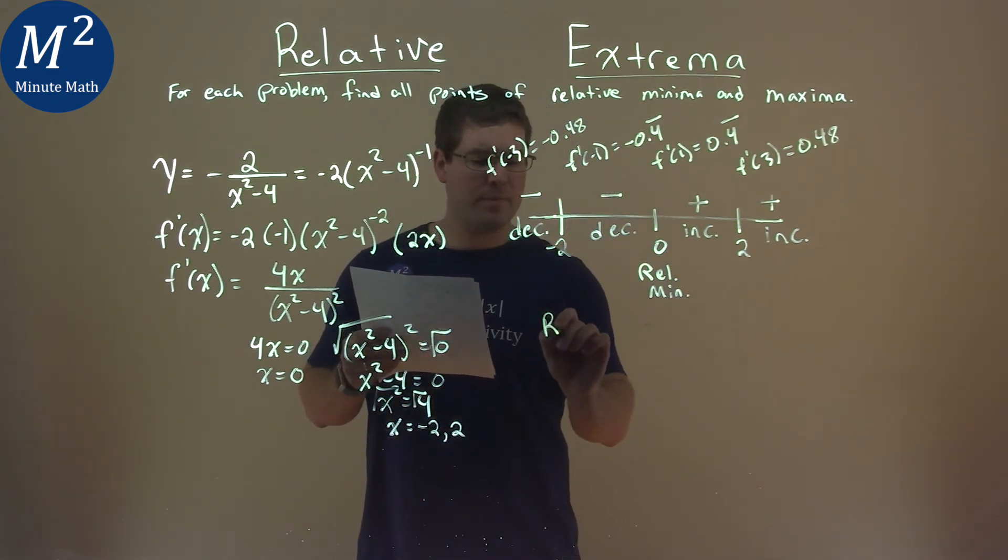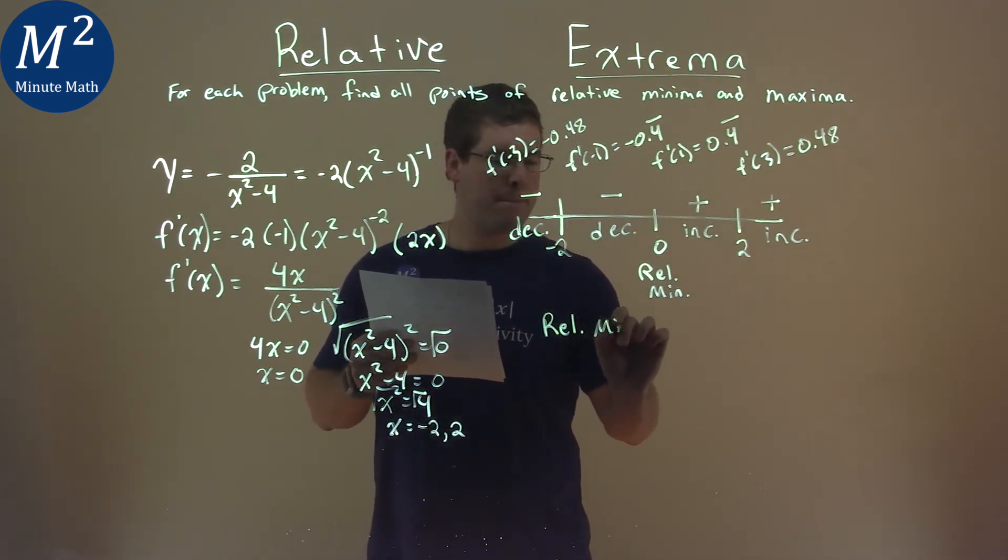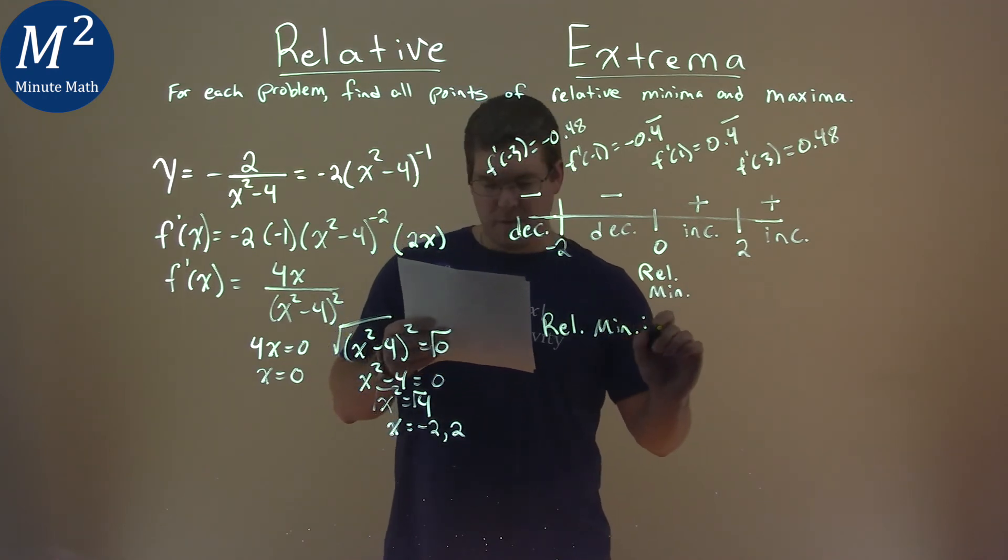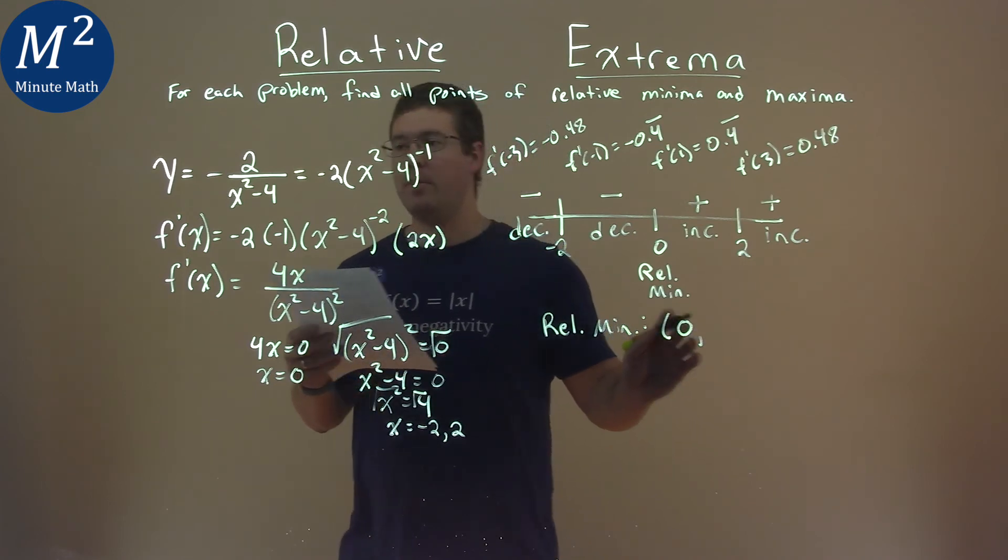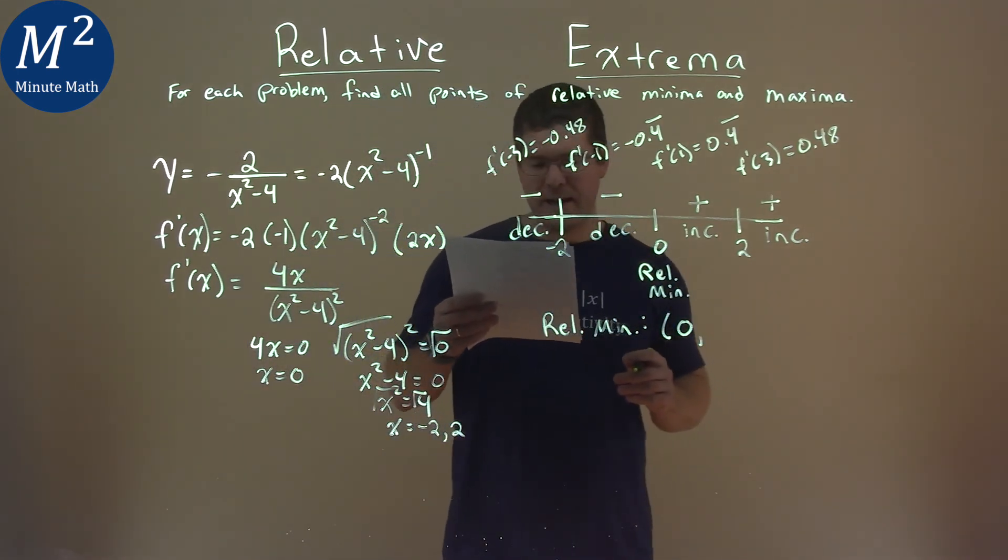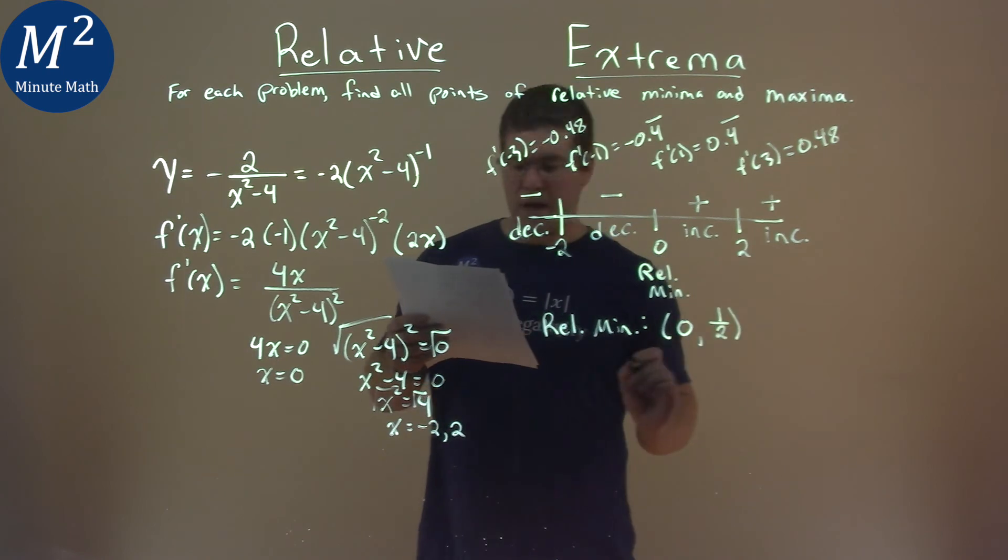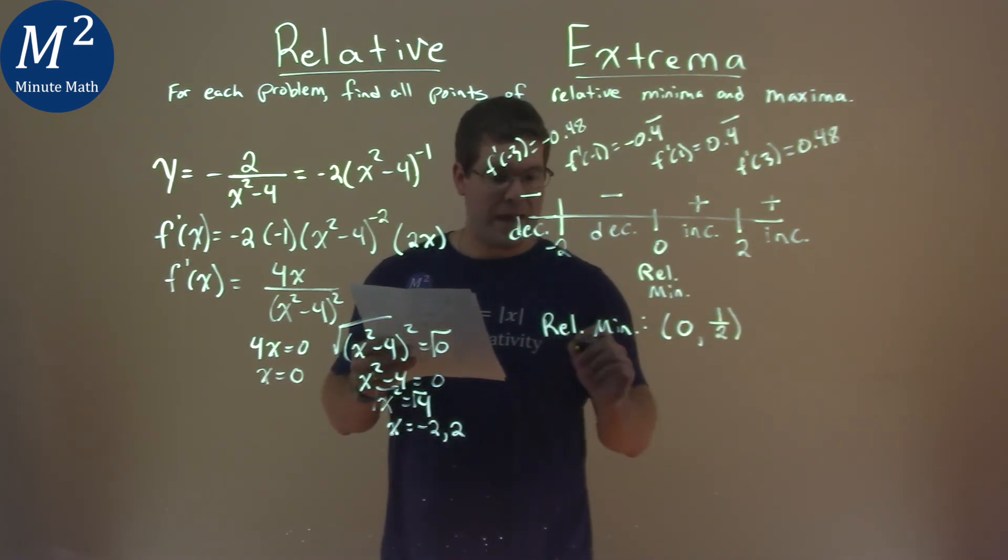So we have a relative minimum at 0 as the x value, and so the y value we plug it into our original function and it came out to be one-half. And for our relative maximum, we don't have any.